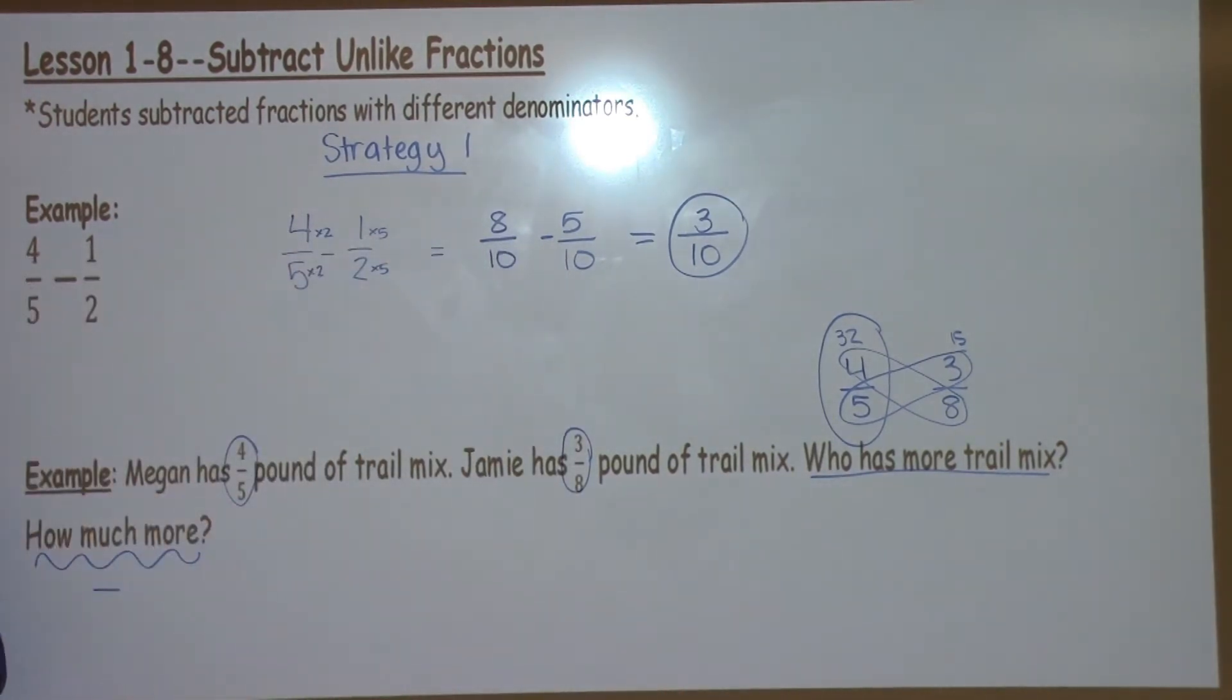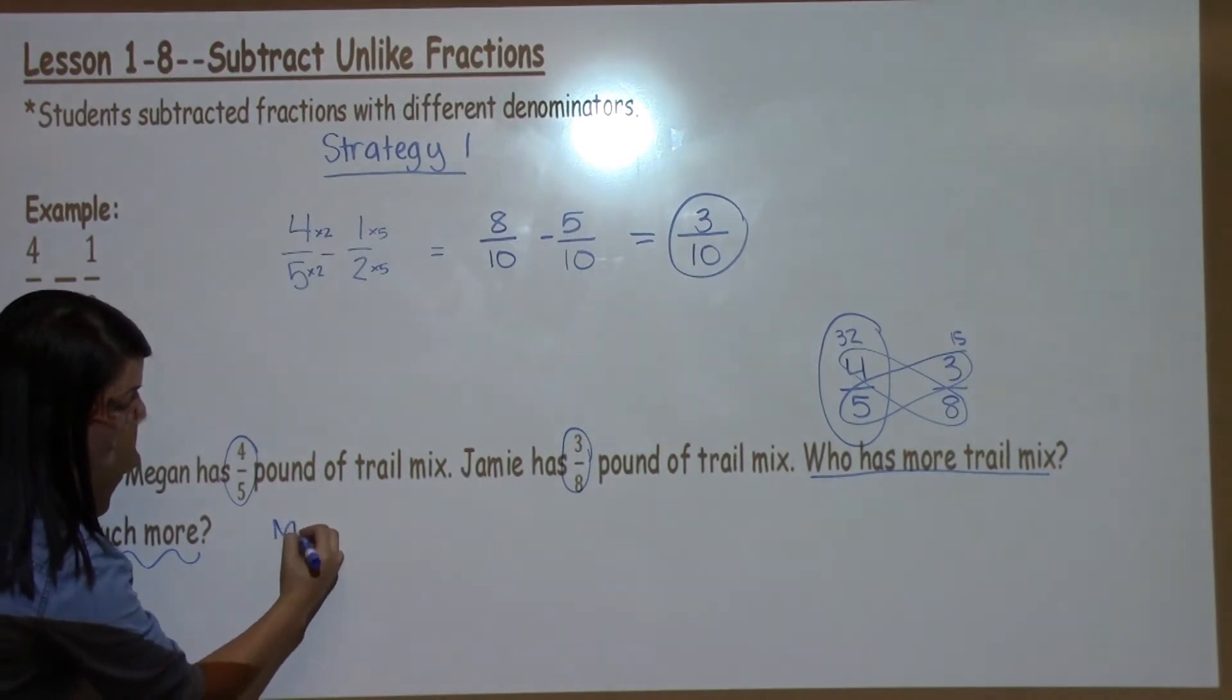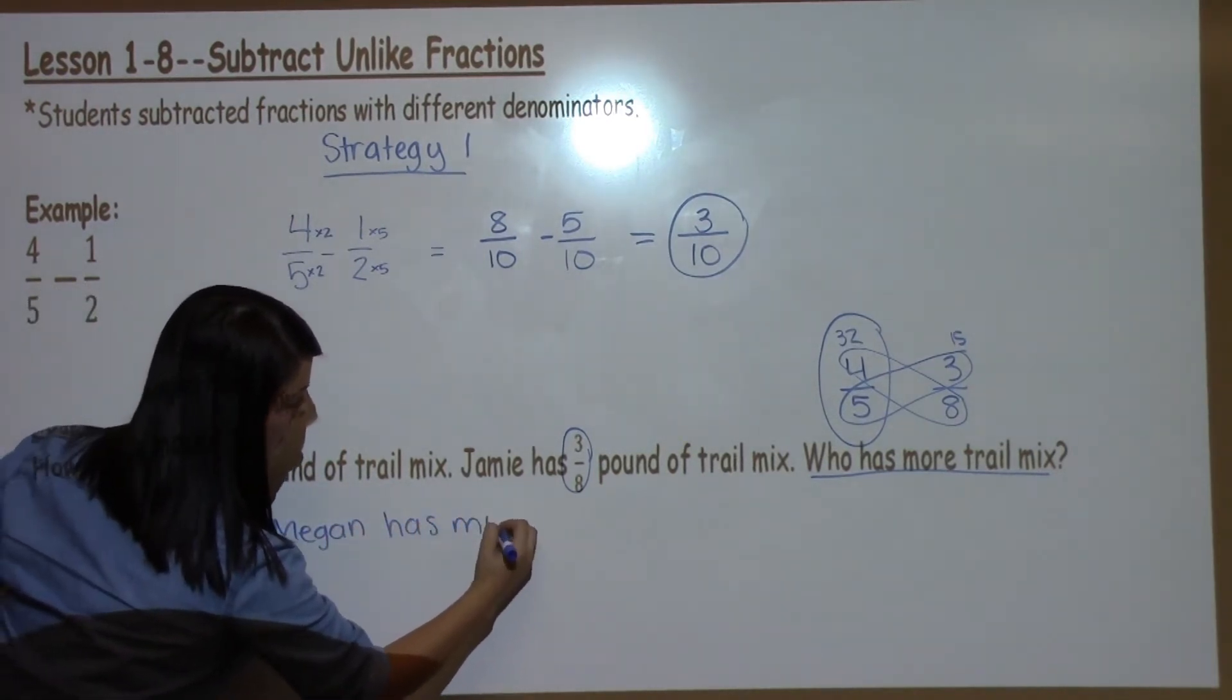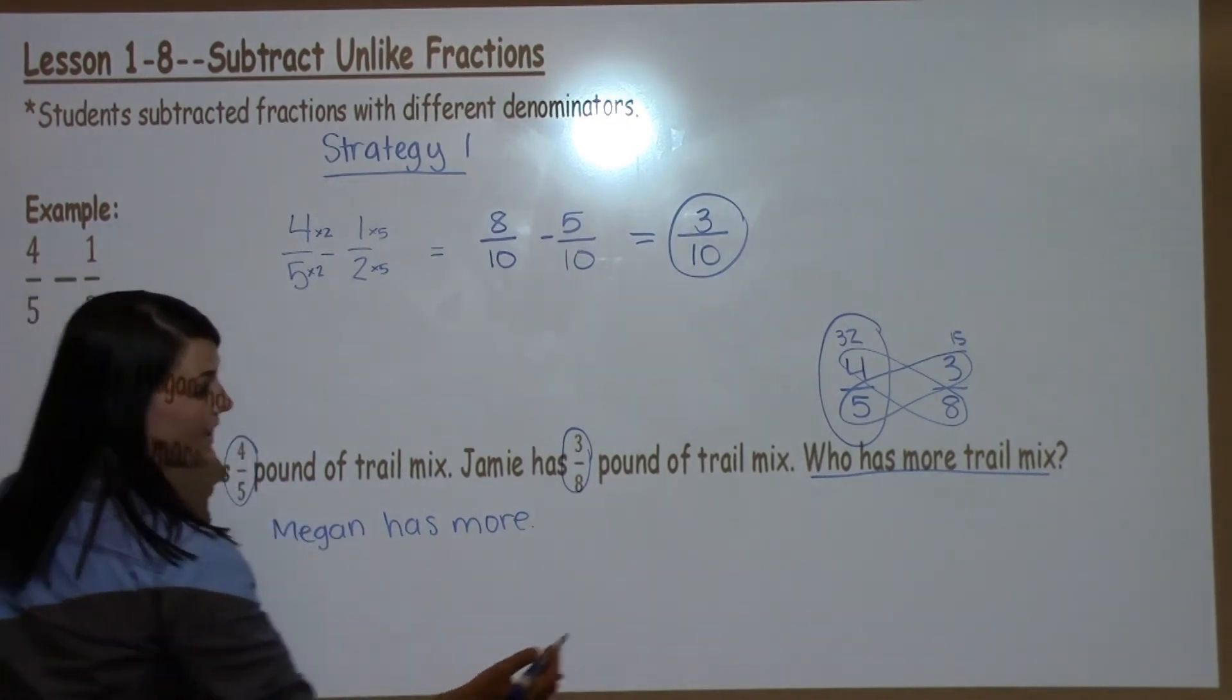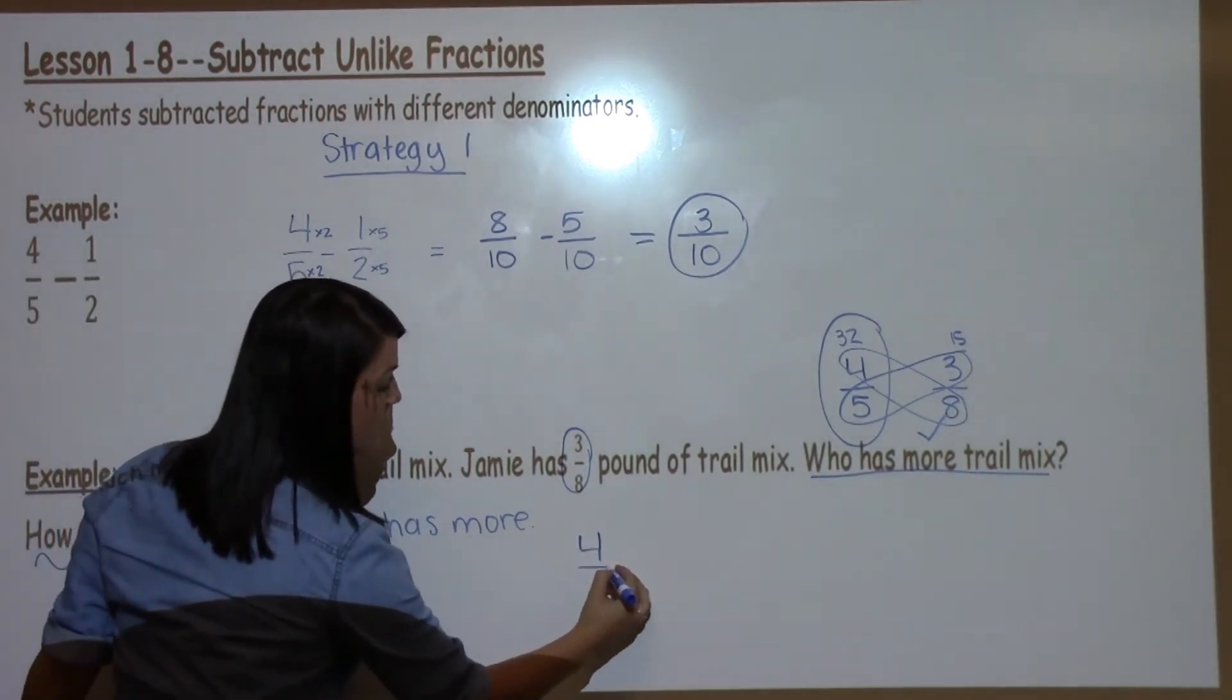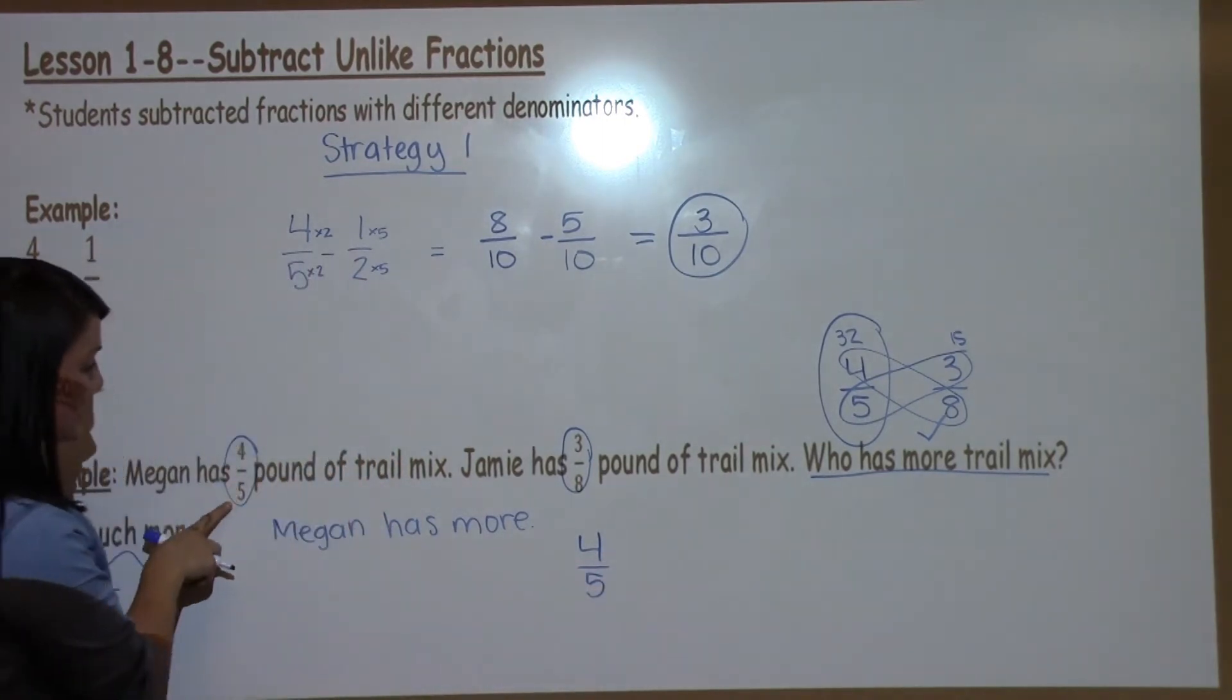Megan has 4 fifths so I know right away that Megan has more trail mix. So I've now answered the first part of my question. The second part of my question is how much more which means I need to subtract.